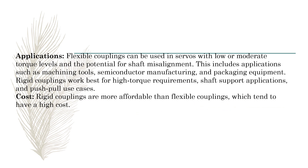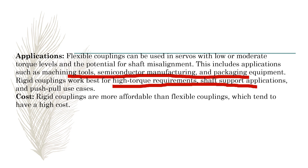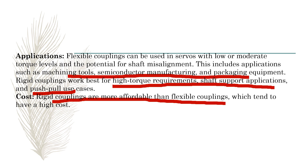For applications: flexible couplings can be used in systems with lower to moderate torque levels and the potential for slight misalignment, including applications such as machine tools, semiconductor manufacturing, and packaging instruments. Rigid couplings work best for high torque requirements and applications needing full, stiff support. Cost-wise, rigid couplings are more affordable — less costly than flexible couplings, which tend to have a higher cost.